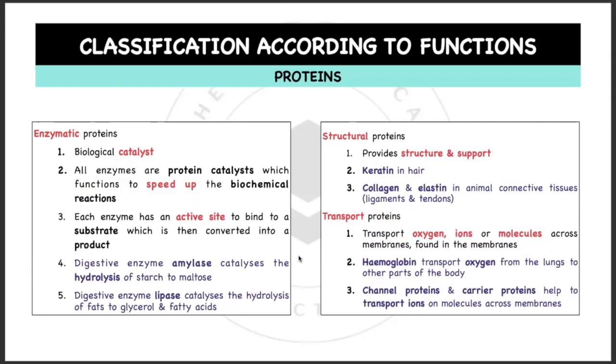For enzymatic proteins, they act as biological catalysts, so all enzymes are protein catalysts which function to speed up the biochemical reactions. Each enzyme will have an active site to bind to a substrate which is then converted into a product. The enzyme and the substrate combine together to get your product. Example would be the digestive enzyme amylase which catalyzes the hydrolysis of starch to maltose.